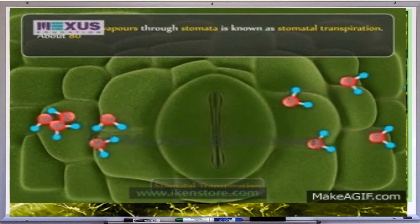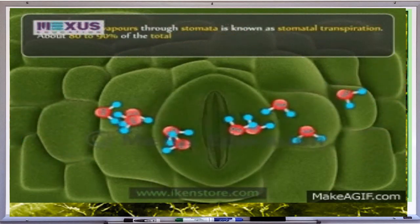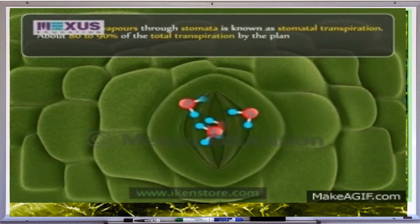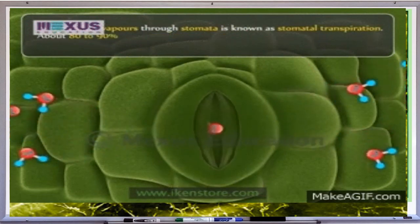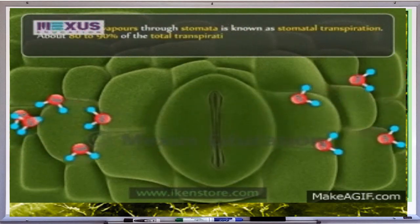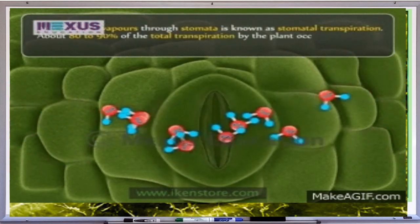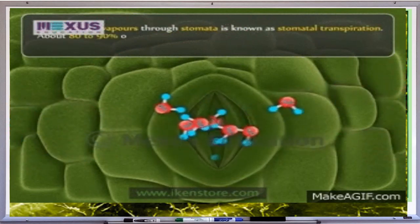The opening and closing of the stomata is due to the change in turgidity of the guard cells. When the stomata are opened, water enters into the guard cell and they become turgid. When they are closed, the guard cells lose water and become flaccid.